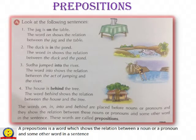Children, look at the following sentences. There are some examples by which you can easily understand what a preposition is. Number 1: The jug is on the table. Look at the picture — there is a jug which is placed on the table. The word 'on' shows the relation between the jug and the table.